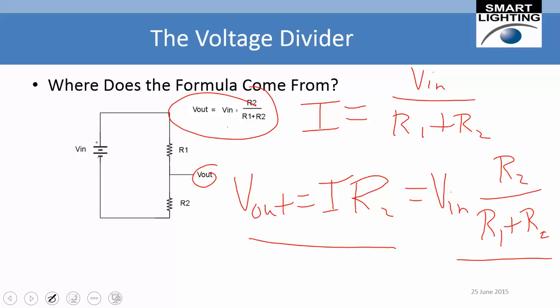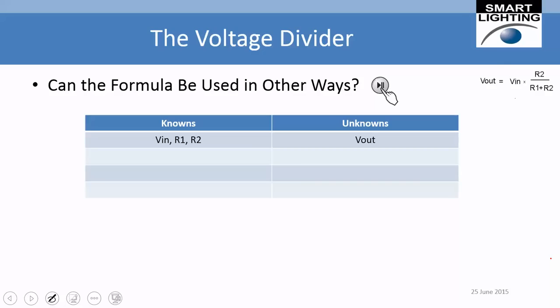Now that we've seen where the expression comes from, let's find some useful ways of using it. Remember we have an expression with four parameters: V_out, V_in, R1, and R2. Normally we're given V_in, R1, and R2 and use them to calculate the output voltage. But there are other ways we can use this formula — this is a good point to stop and think about it, so go ahead and pause for a moment.